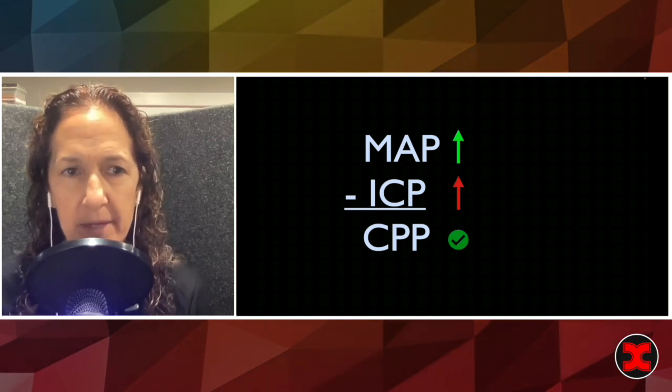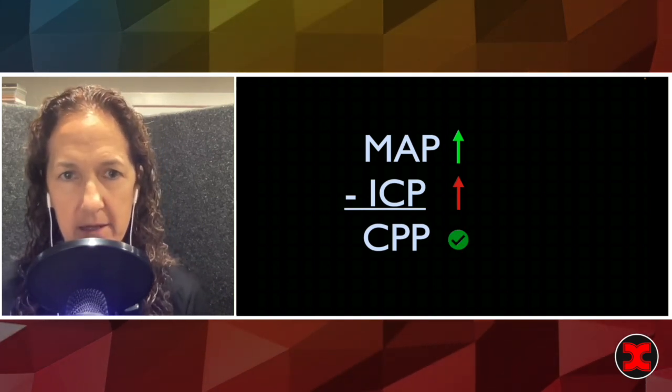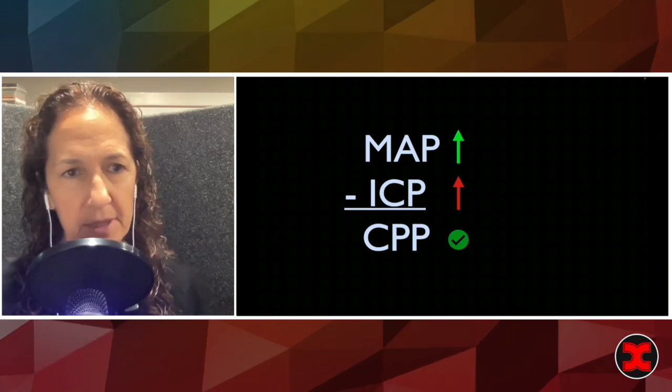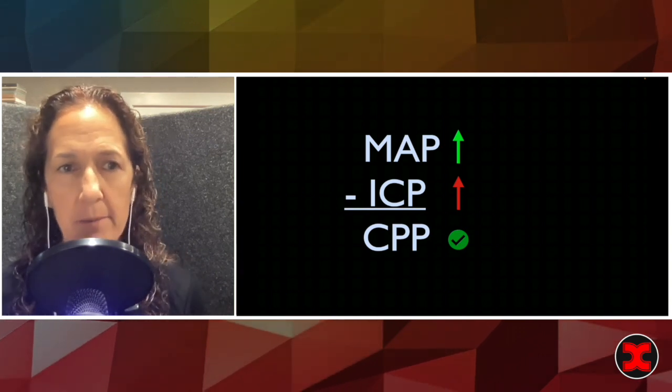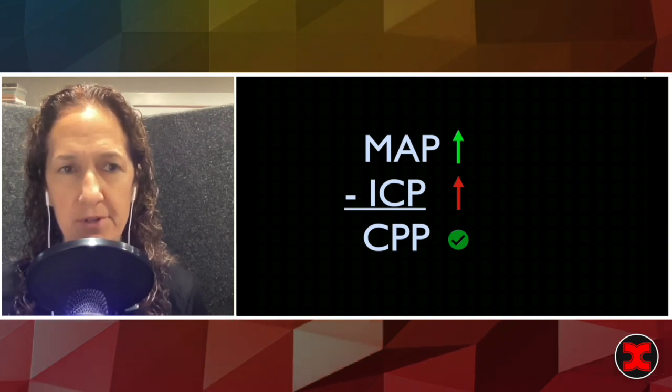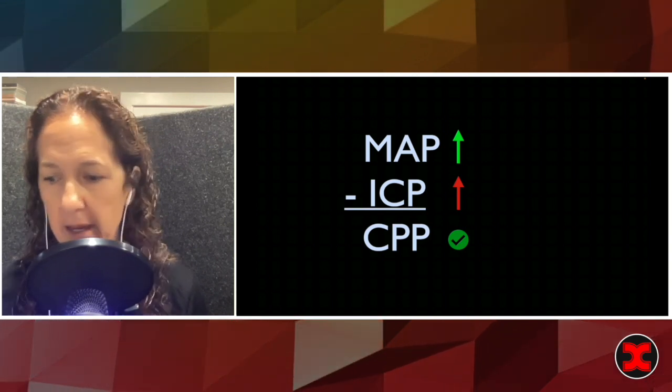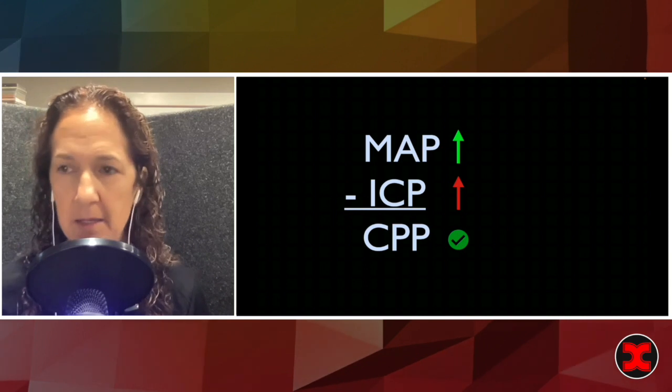And that's the key, because there's a limited space in the skull. When you have something like a bleed or edema or traumatic brain injury, intracerebral hemorrhage going on, you need to preserve CPP and that's best done through ICP.